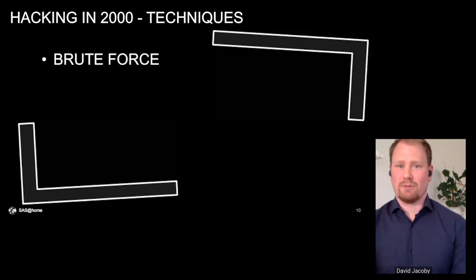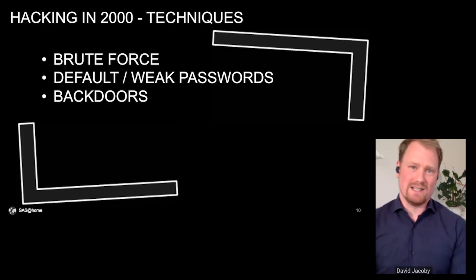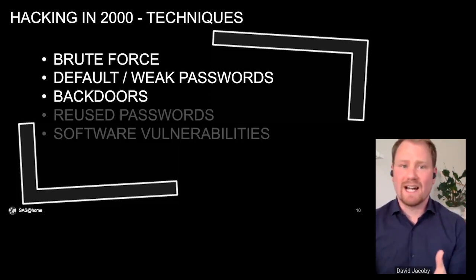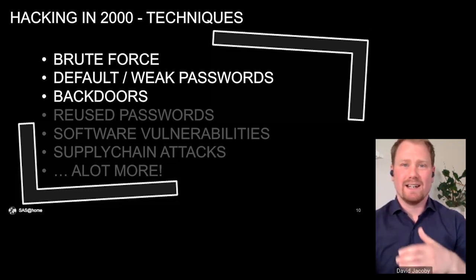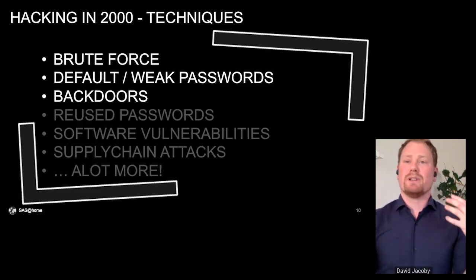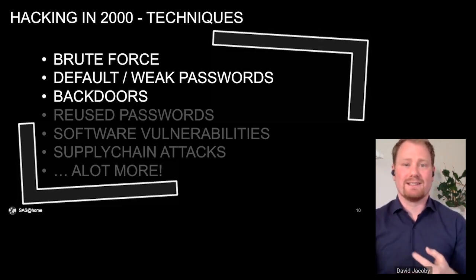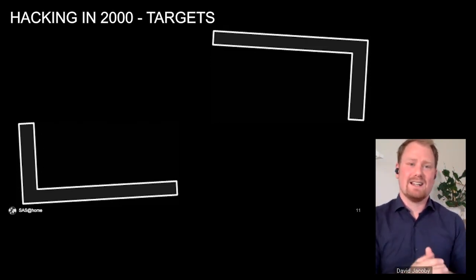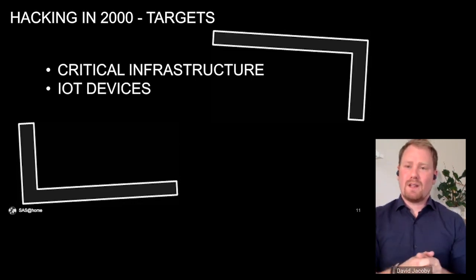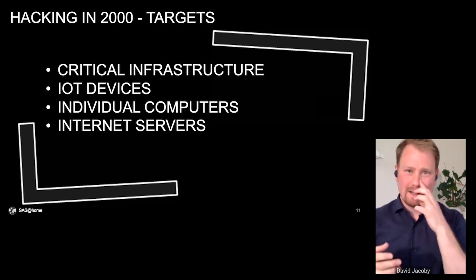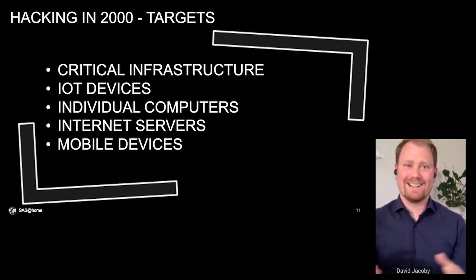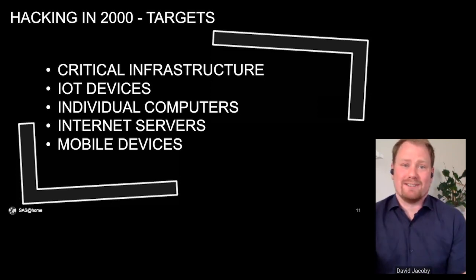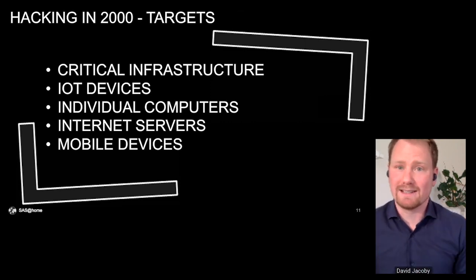Then we fast forward to the year 2000 — basically the year of the cyber criminal. If you analyze the techniques being used by cyber criminals and hackers, you still have brute force, weak passwords, and backdoors in software and hardware, but you also have reused passwords, software vulnerabilities, supply chain attacks, and a lot more different kinds of attacks. In terms of targets, it's still critical infrastructure, IoT devices, individual computers, internet servers, and then you have mobile devices — that's the biggest difference between the 1980s and 2000s.